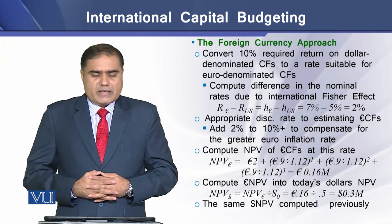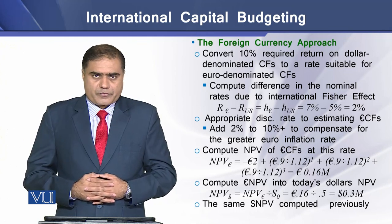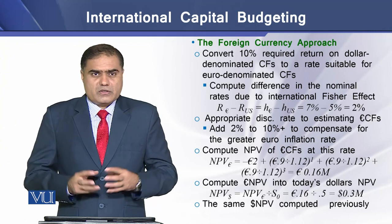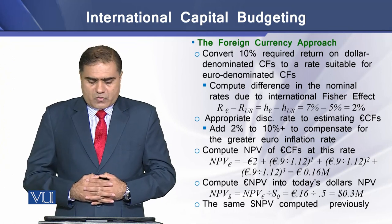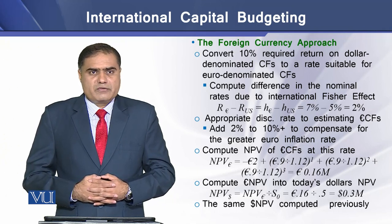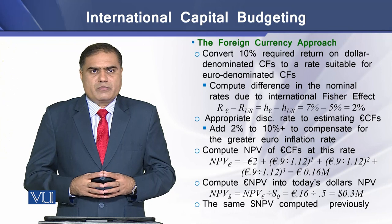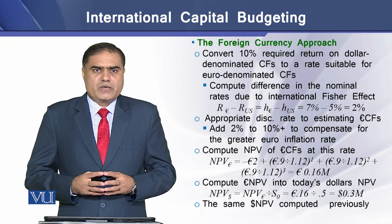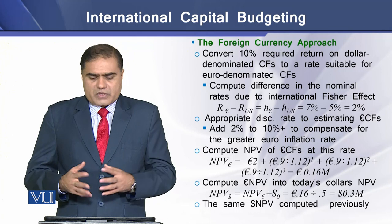The net present value of euro denominated cash flows at the 12% discount rate is equal to 0.16 million euros. In the next step, we convert this euro denominated net present value into today's present value at the exchange rate of 0.5, which gives us a dollar denominated net present value of 0.3 million. We see that this is the same result as computed in the first approach.